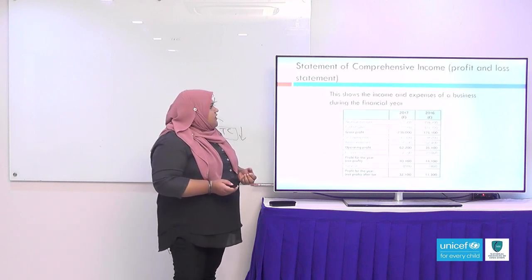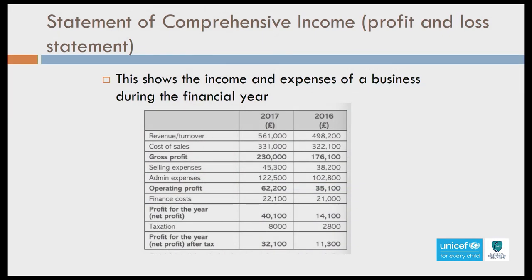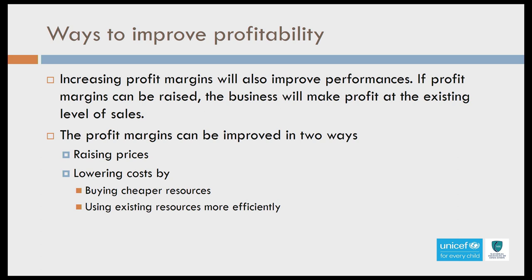This is what is called the comprehensive income statement, otherwise known as the profit and loss statement. This is where the information for the calculations comes from. You don't have to worry about how to get this information — it will be given in the question. Now, how do we increase profitability?